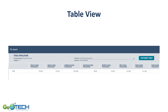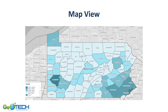If you want to examine a pattern within your state, you can switch to the map view. Here is a map view of Pennsylvania based on the 2010 census numbers, showing large high-population areas in southeastern Pennsylvania and Allegheny County in western Pennsylvania.